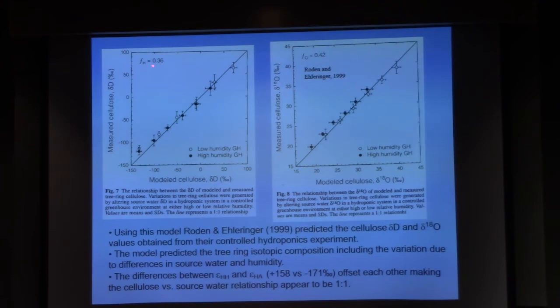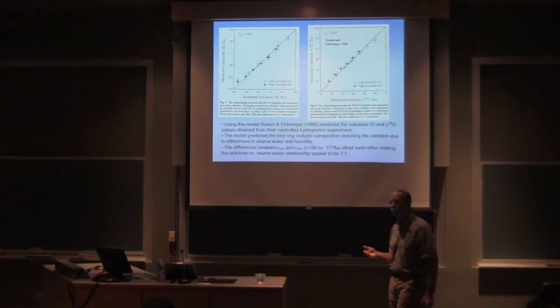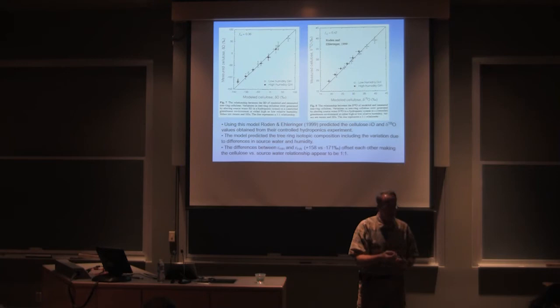So one of the things this model gives you is this ratio of F. Remember, the F is the proportion that exchanges. And what we find is that about 40% of the oxygens that were in the leaf water exchange by the time they get to the cellulose.